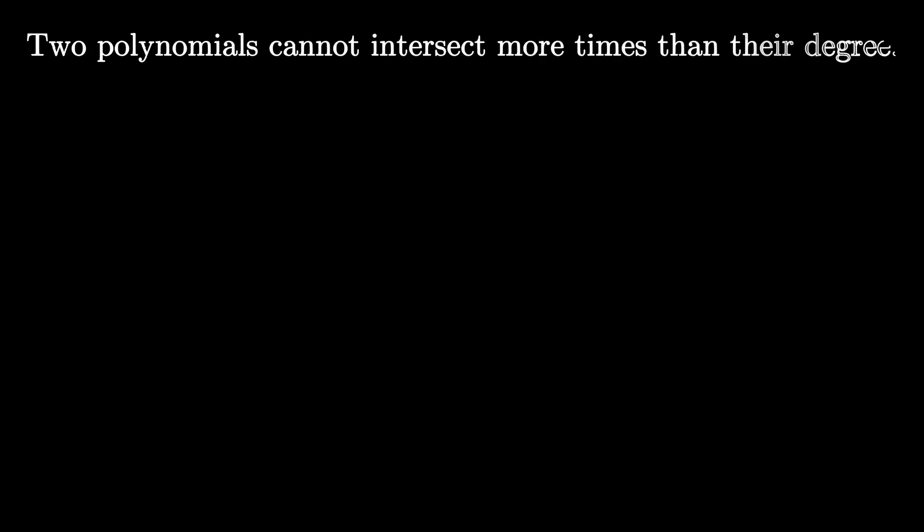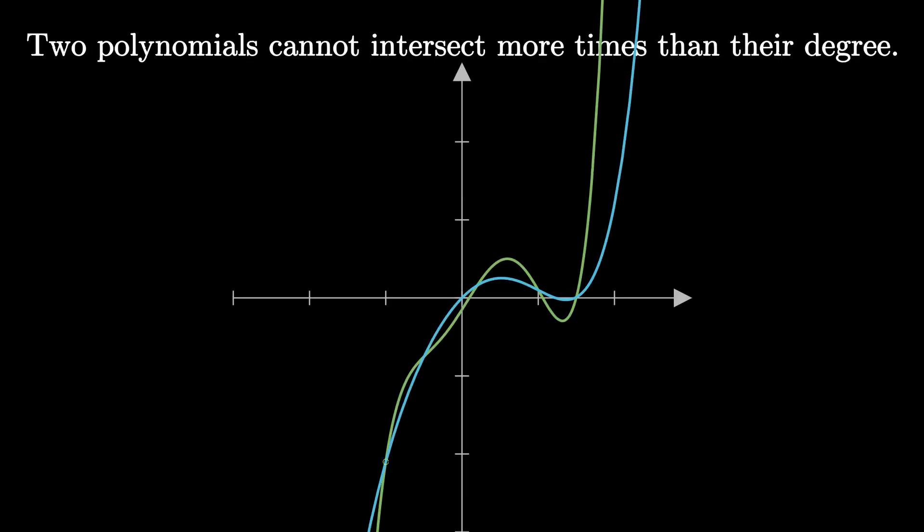You see, it's a fact that two polynomials that are both of degree at most 5 cannot intersect in more than 5 places. We'll see why that's true in a later video. But as a consequence, if you have two curves that intersect at more than 5 places and you know that one of them is a polynomial of degree at most 5, then that means that the other curve is not a polynomial of degree at most 5.